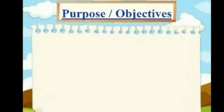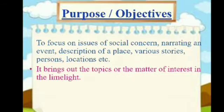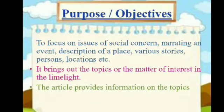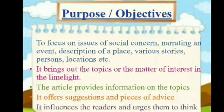Purpose or objectives of article writing. The main purpose of article writing is to focus on issues of social concern, narrating an event, description of a place, various stories, persons, locations, etc. It brings out the topics or the matter of interest into the limelight. The article provides information on the topics, offers suggestions and pieces of advice, and influences the readers and prompts them to think.